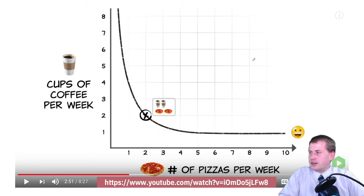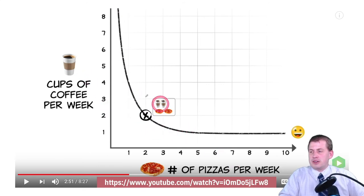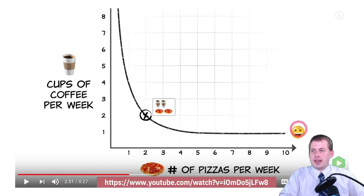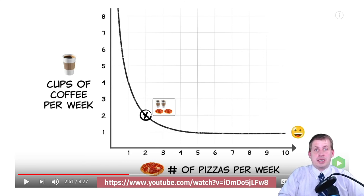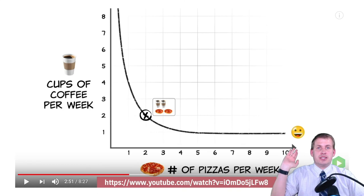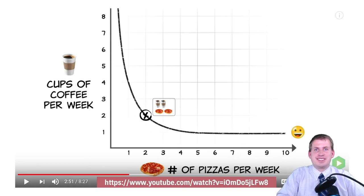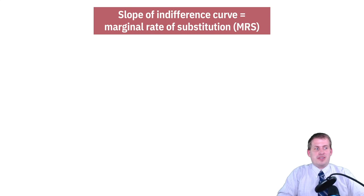On the course website for today, there's a video that goes through a similar example — instead of ice cream and pizza or free time and grades, it uses pizzas and coffee — but it walks through the same idea of moving up to a higher indifference curve and becoming happier. I recommend pausing this video, going to the course website, watching that first video to learn more about indifference curves, and then coming back here, since it's a weird but important concept.